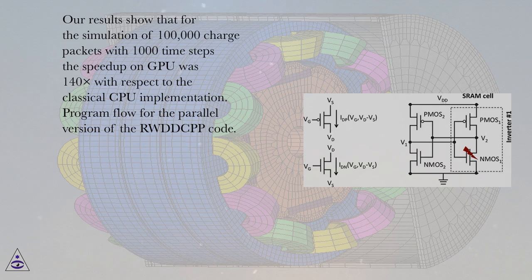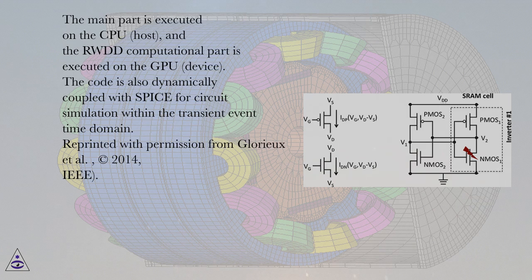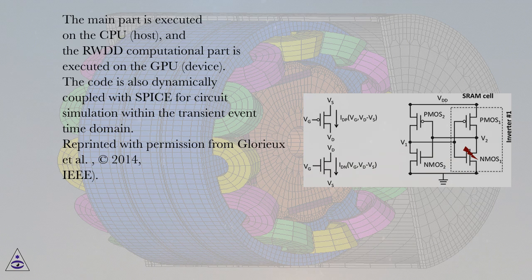Program flow for the parallel version of the RWDD CPP code. The main part is executed on the CPU (host), and the RWDD computational part is executed on the GPU (device).